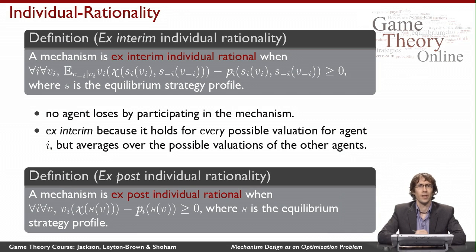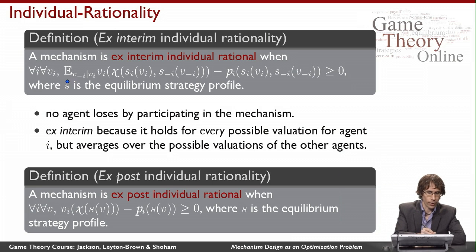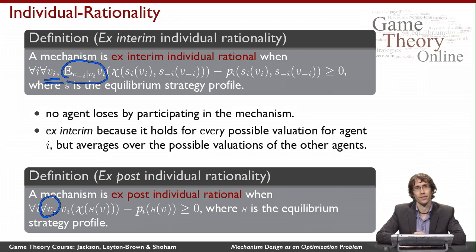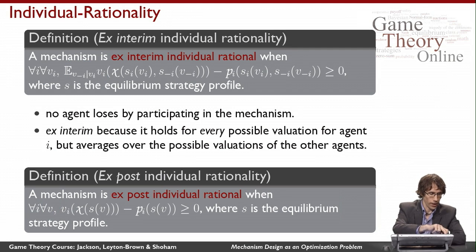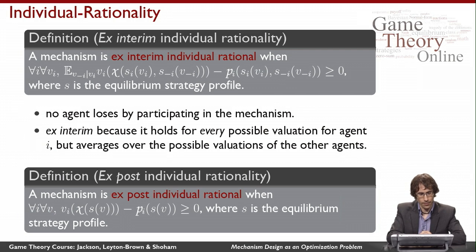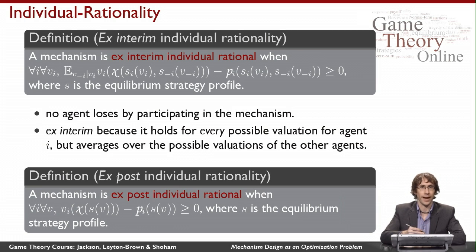Ex-post individual rationality is stronger: I don't want to average over everybody else's types. Maybe I don't believe I actually know the distribution over everyone else's types, or I just want the stronger condition that I never want to be in a situation where, in equilibrium, I would lose. I get rid of this expectation over types and change the quantification over my value into a quantification over everybody's values all at once: for all agents and for all joint values, pointwise, my value for the choice made minus my payment is always greater than or equal to zero. If I'm ex-post individually rational, I'm always ex-interim individually rational, but the reverse is not necessarily true.